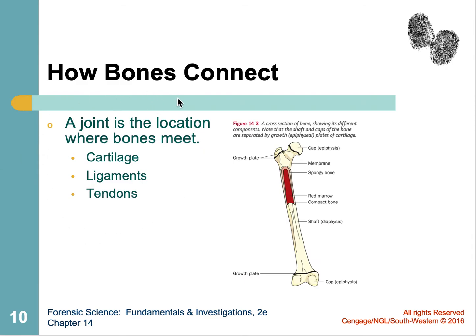We do need to know about joints — where bones are connected together. There are four things. One is the bone itself. Two is cartilage, mainly on the ends of the bone, which acts as a friction reducer — you don't want bones rubbing together. That is called hyaline cartilage. Then you have ligaments, which connect bone to bone and add support to your joints. And tendons, which connect muscle to bone — that's where you get the connection from the muscle system to the skeletal system.